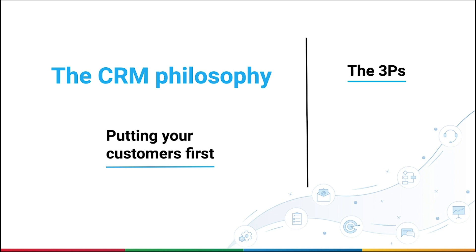We call it the three Ps – Priorities, Process, and People – and each one has its own significance. Let's take a look at them.